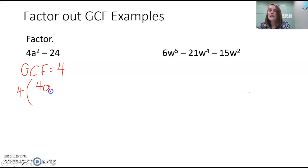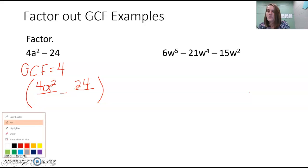So that means that you're really taking 4a squared and you're dividing it by 4. And you're taking 24 and you're dividing it by 4. I'm going to erase those and make them the same color so that we can see exactly what's going on.